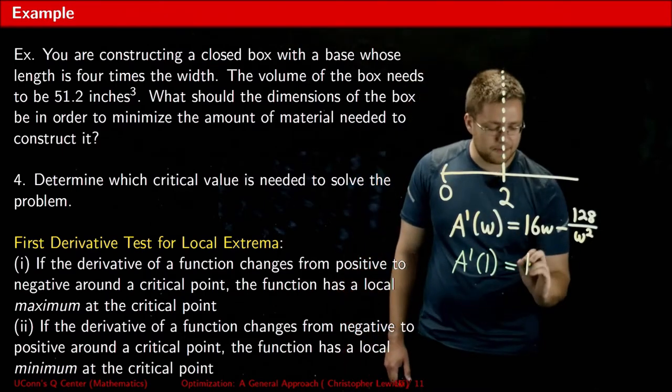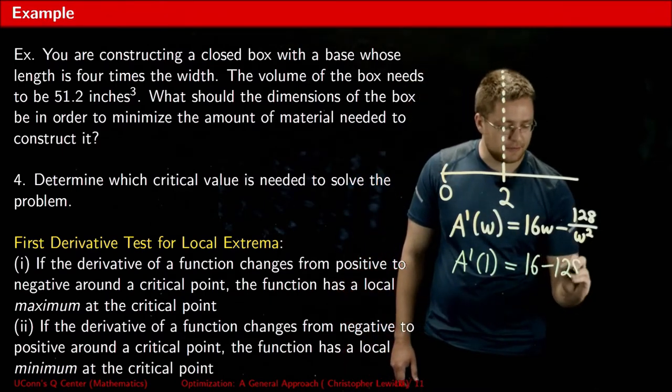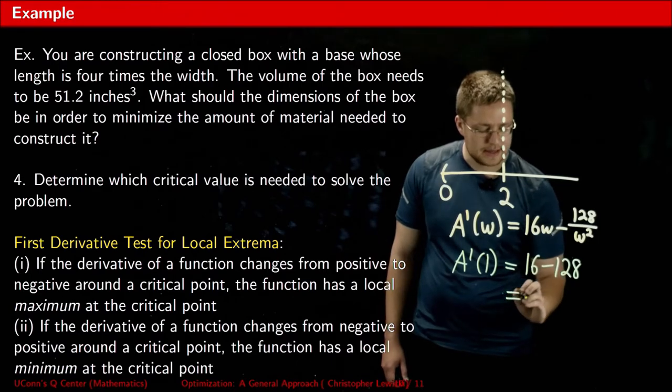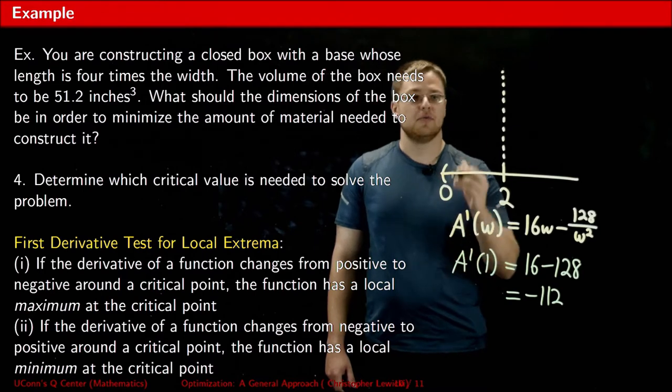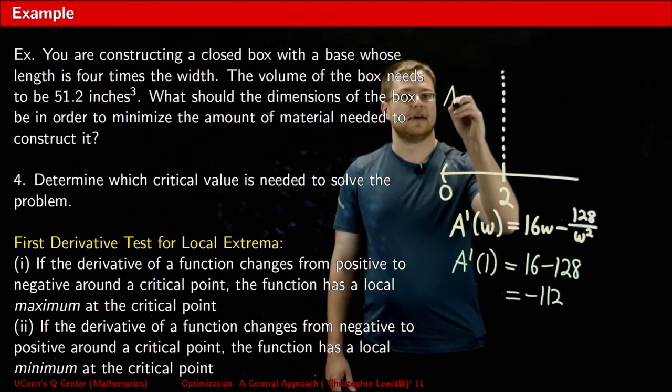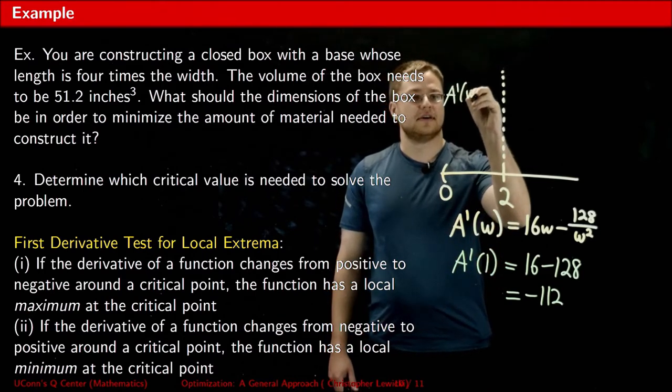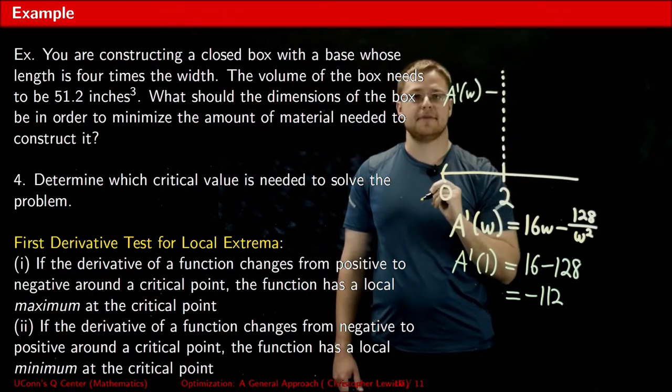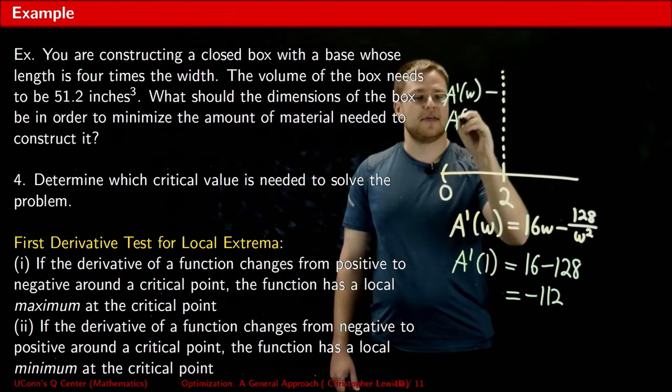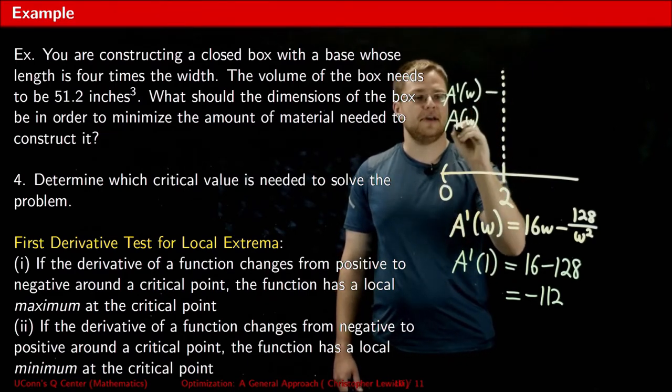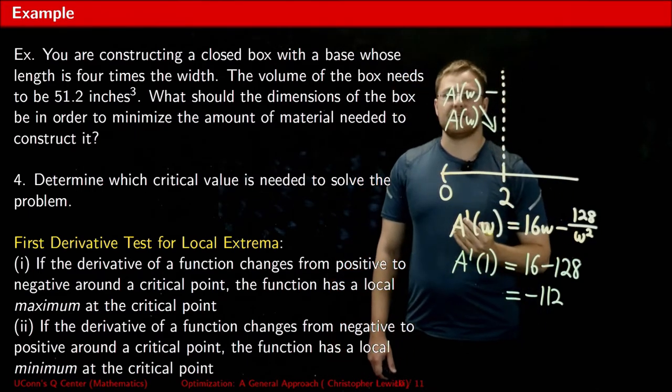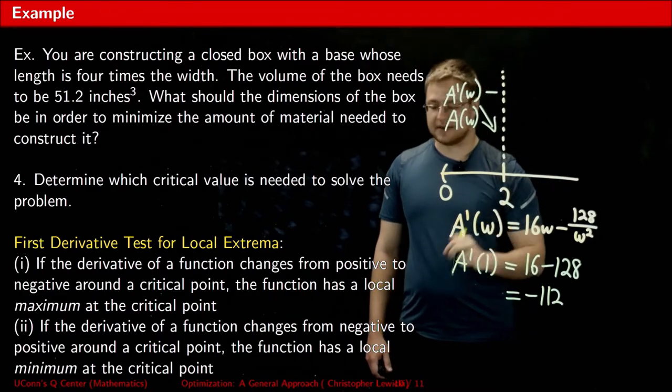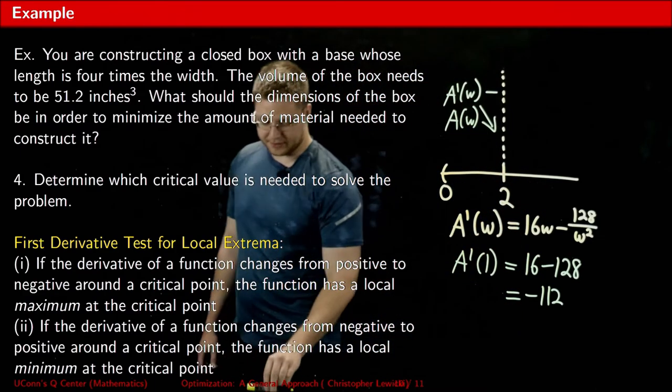What I end up with is 16 minus 128, which is negative 112. Because this is a negative value, what this tells me is, in this region, the derivative is negative. And therefore, the surface area is decreasing from zero to two. Now, let's test a point somewhere beyond two to see what's happening after the critical value.